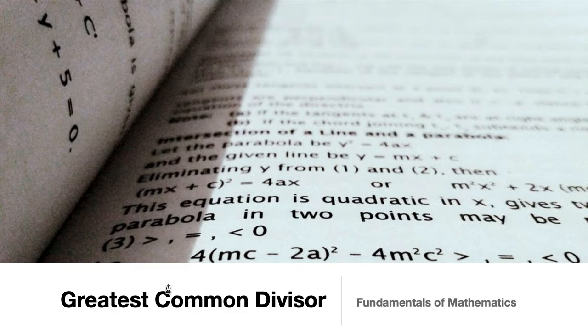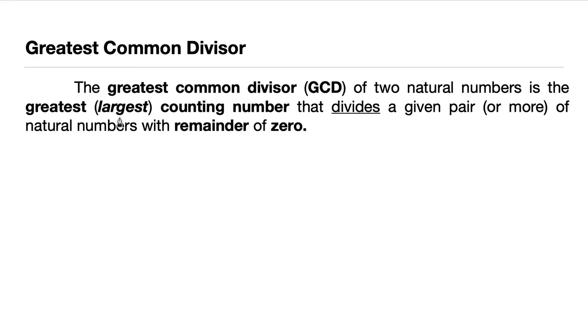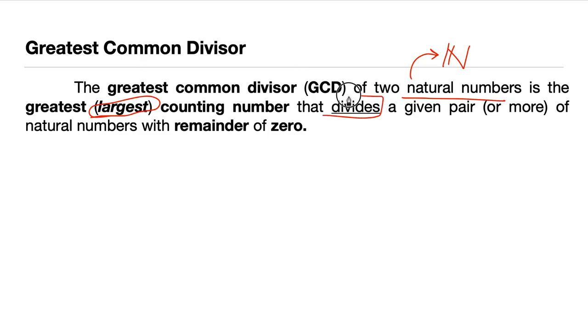The greatest common divisor, also known as GCD, of two natural numbers is the largest counting number — where counting numbers are all integers starting with one — that divides a given pair or more natural numbers with a remainder of zero.